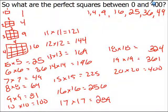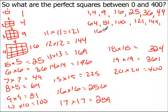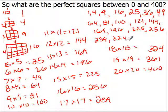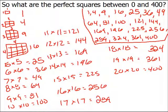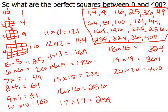So our perfect squares from zero to four hundred are: 1, 4, 9, 16, 25, 36, 49, 64, 81, 100, 121, 144, 169, 196, 225, 256, 289, 324, 361, and 400. Remember, all we did was square the number — so this is one squared, two squared, three squared, four squared, five squared, six squared, seven squared — because those create a square and the units inside make perfect squares. We need to know all of these.